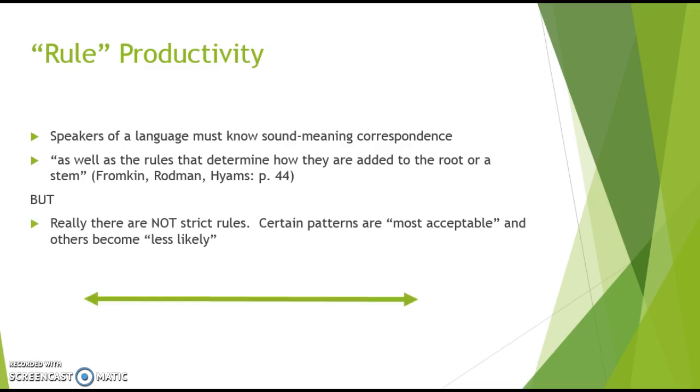I think that was just like a shortcut for the idea of the patterns, because as we know, there really are not strict rules. In that same chapter, the authors say that certain patterns are most acceptable and others become less likely. So really, the idea of what we can do is on a continuum of what prefixes and suffixes can go on to which stems and which patterns are less acceptable. And the same is true for sentences. There are certain patterns that are most acceptable and others that become less likely.